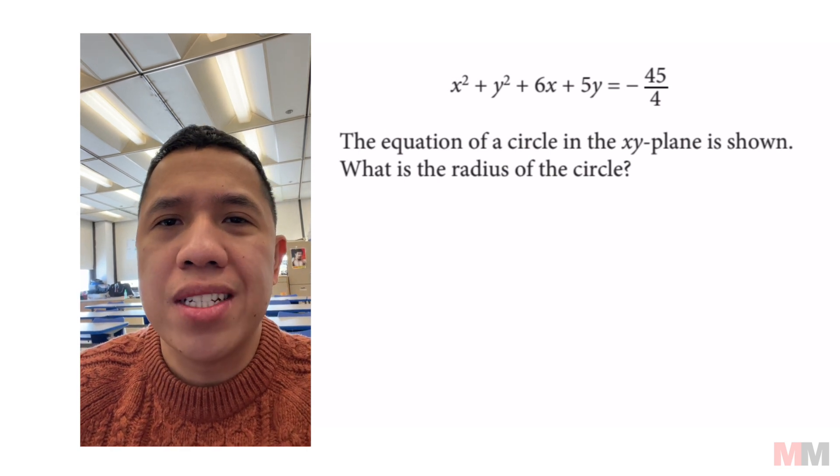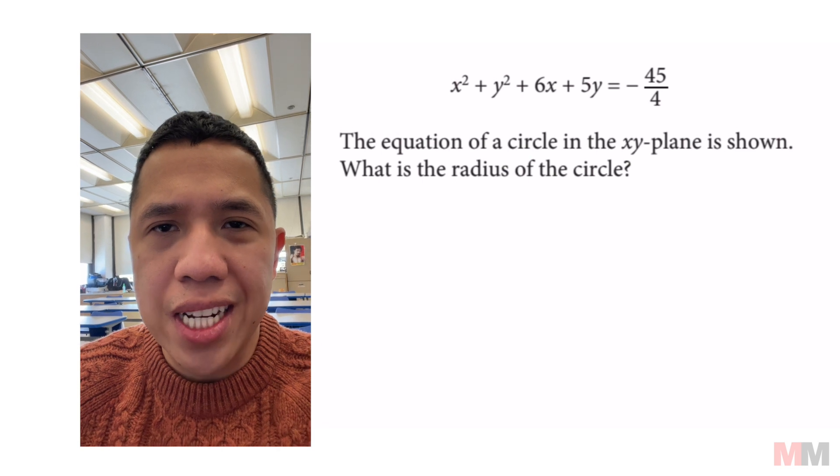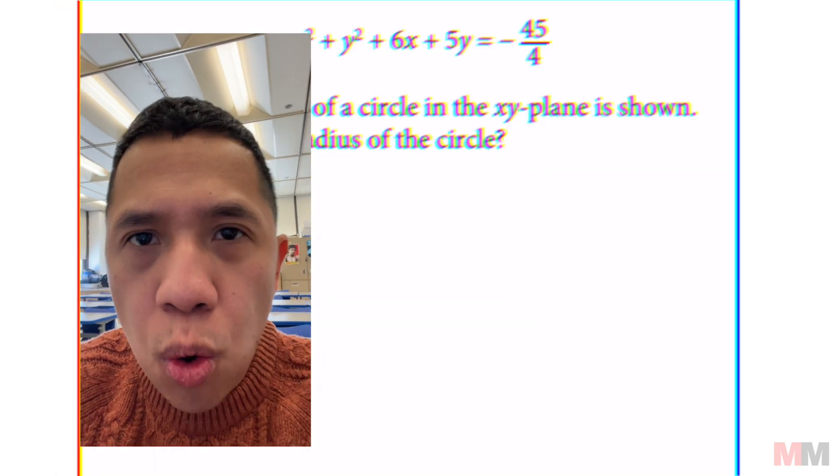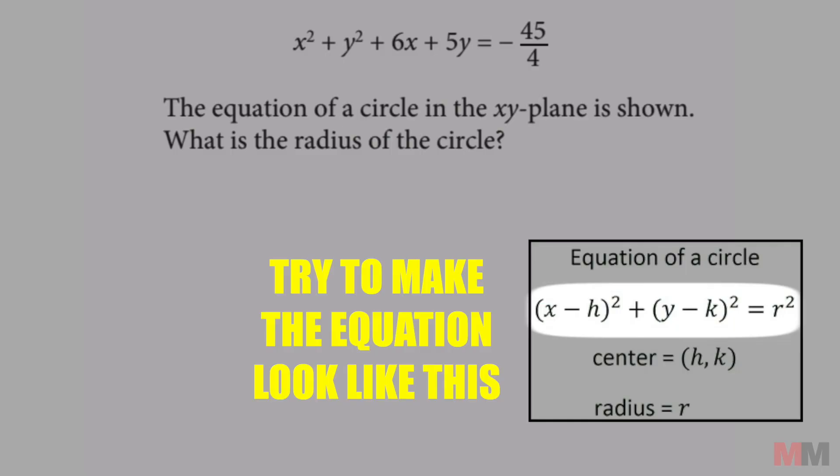Here's one of those common questions that show up on the SAT about a circle. Just make sure you know the equation of a circle and how to complete a square. Enough of me talking, let's go! The equation of a circle is shown above, what is the radius of that circle? So the first thing that we're going to have to do with this question is to make it look like the equation of a circle. And you can start off by just organizing these terms right here.